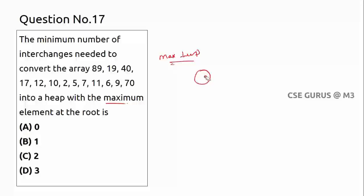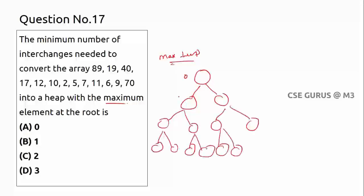There are 13 elements total, with indices 0 through 12. We start inserting from index 0. First, 89 is placed at index 0. Next, 19 is placed at index 1. Check the max heap property: 89 is greater than 19, so no interchange needed.